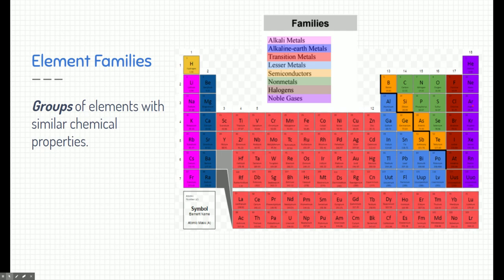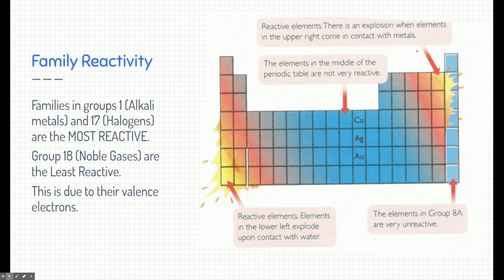Now, families are groups of elements with similar properties, specifically similar chemical properties, and they're found as groups on the periodic table. So these are different families. Now, some of the families, like in group 13 through 16, don't follow a strict column guideline, but they're pretty close. And all of these elements follow similar chemical properties, like the alkali metals explode in water, and the halogens are all gases.